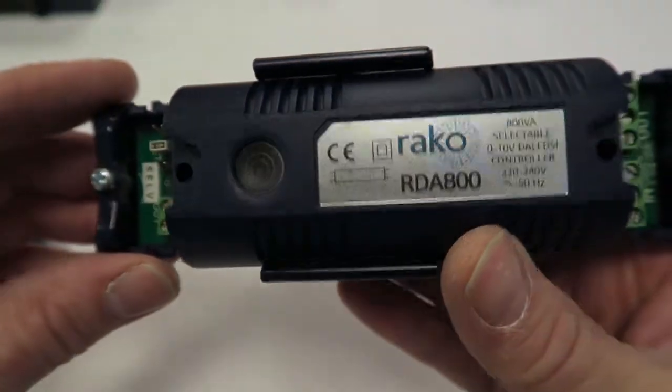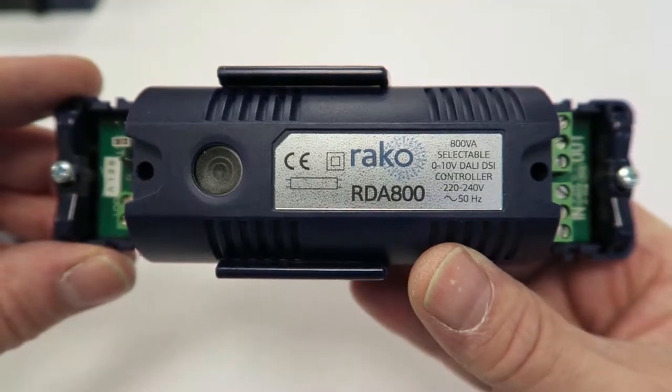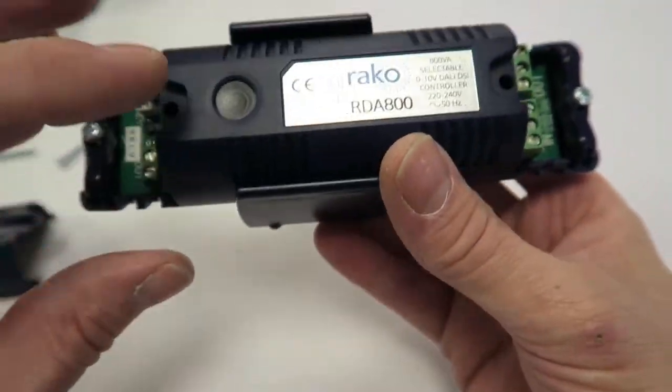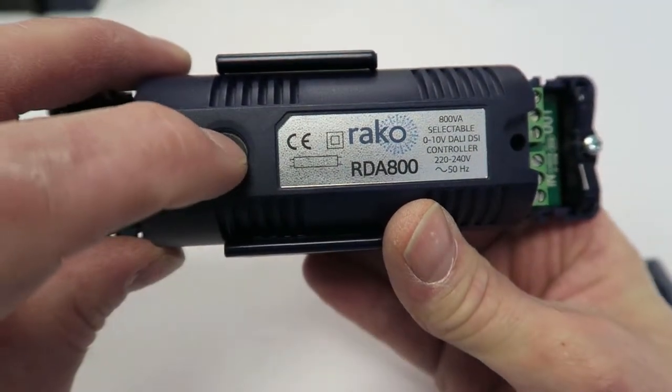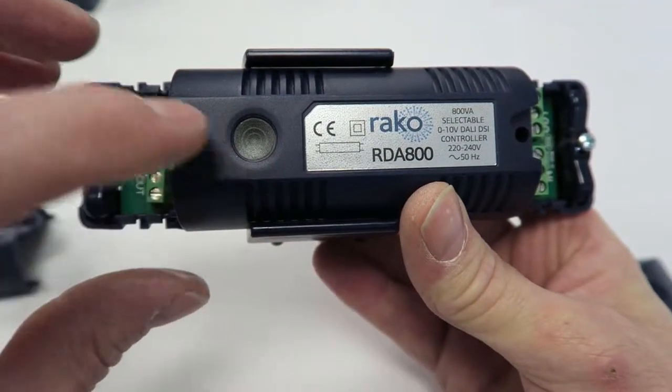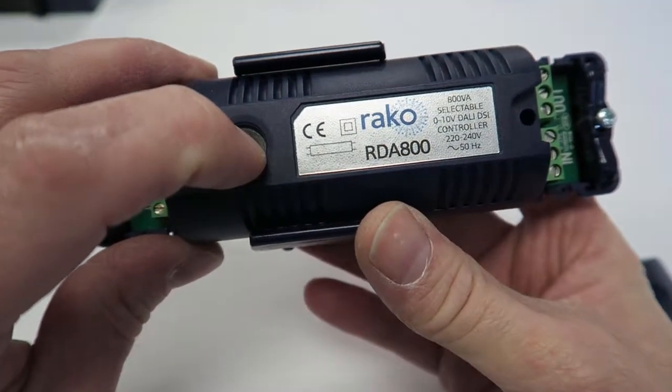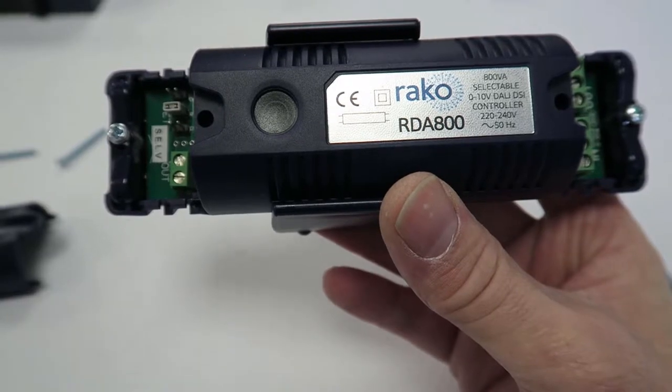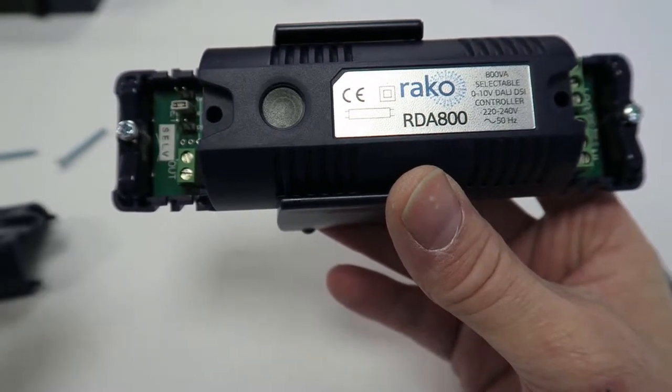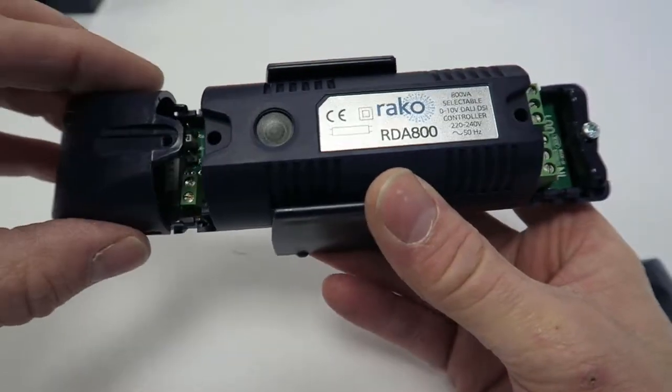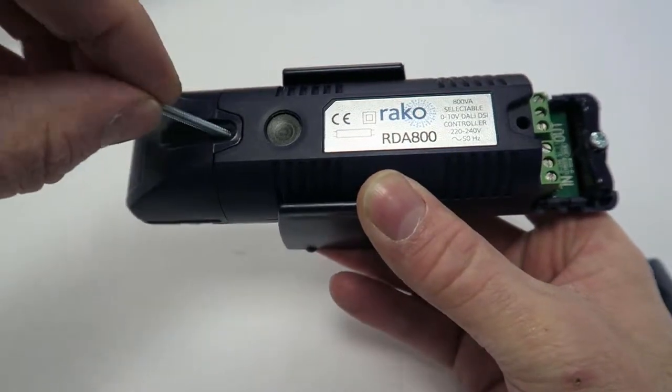You can control up to 800VA of load. Each of these modules come with a button on the top here, which is a commissioning button, so you press and hold. When you're commissioning the module to the system, it flashes, and then you can, using the software, address that module to the project. So that's the RDA 800.